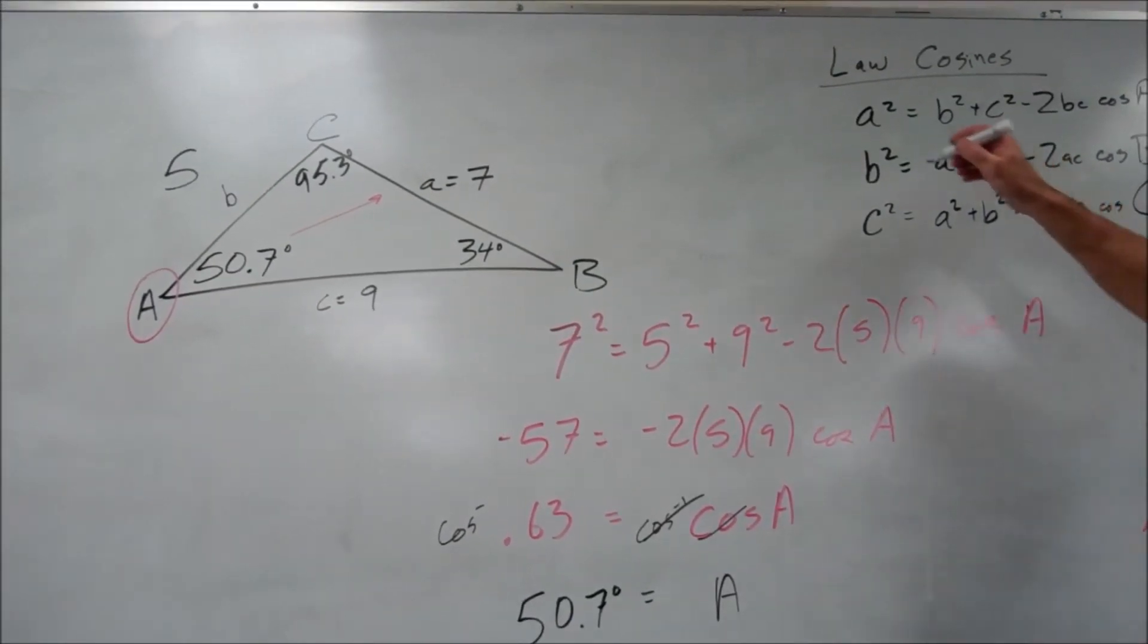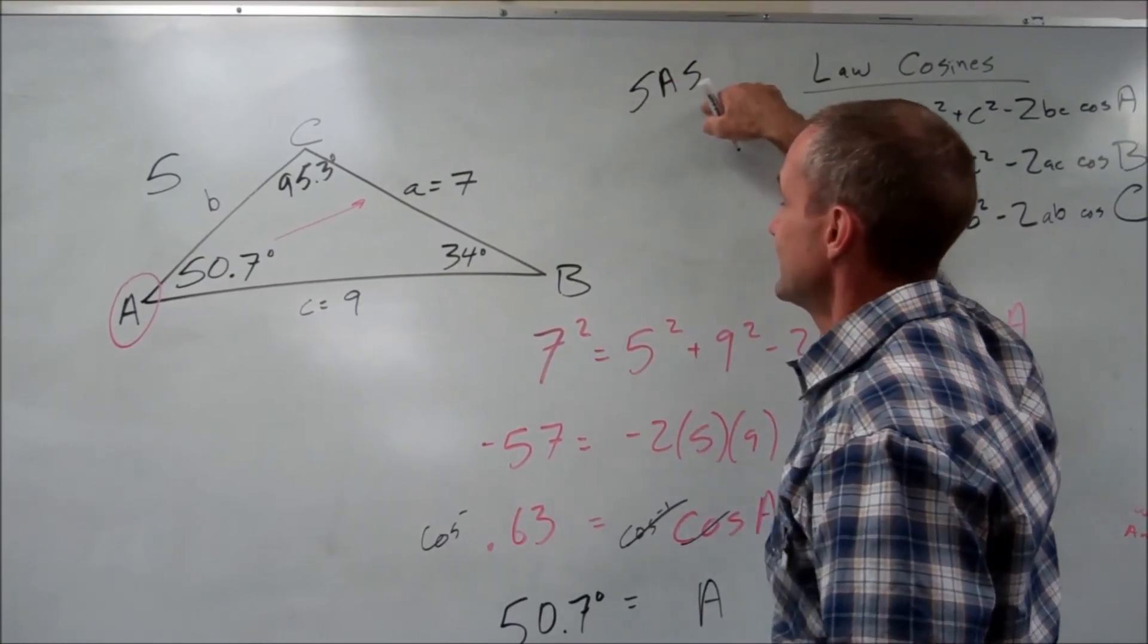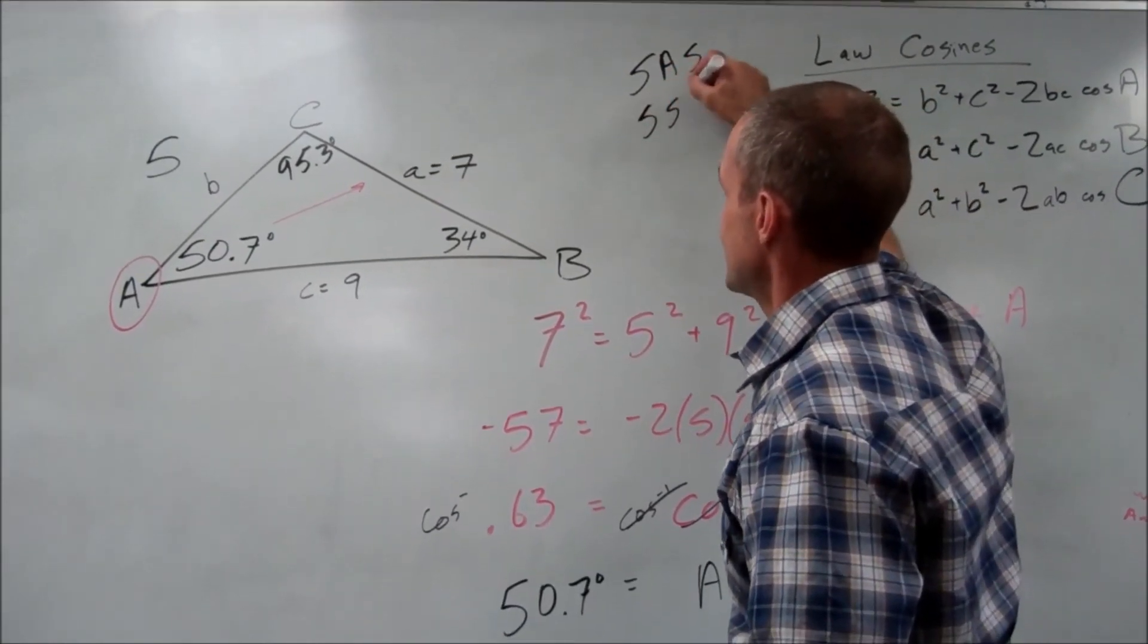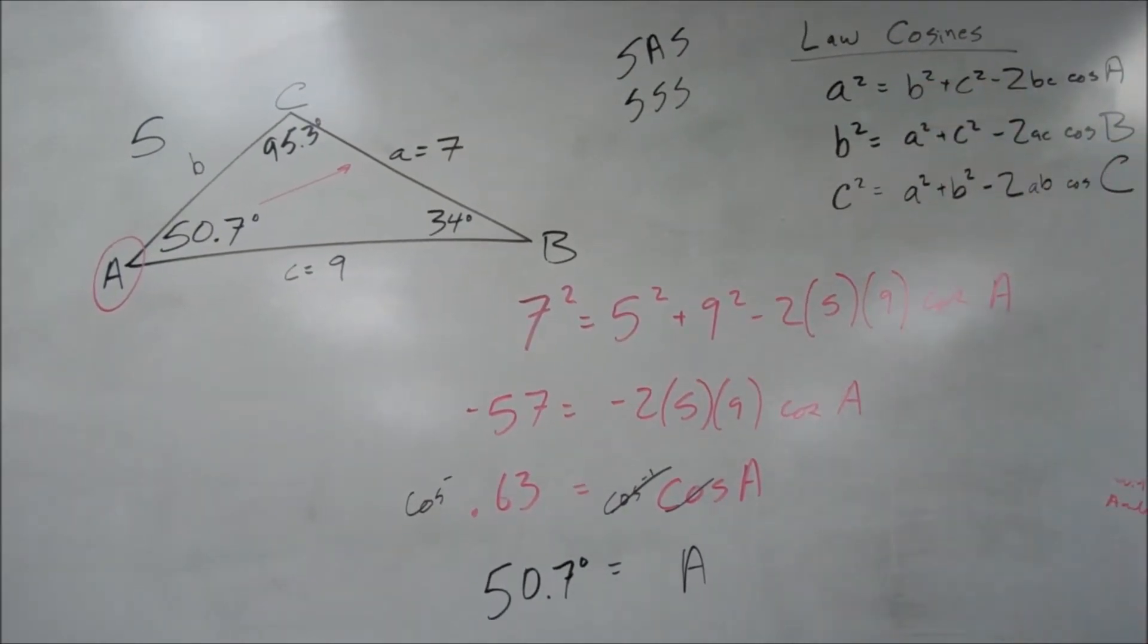And you're really going to use the law of cosines if you're given a side, an angle, and a side. Or if you're given side, side, side. There are four unknowns here. You have to have at least three of them. All right.